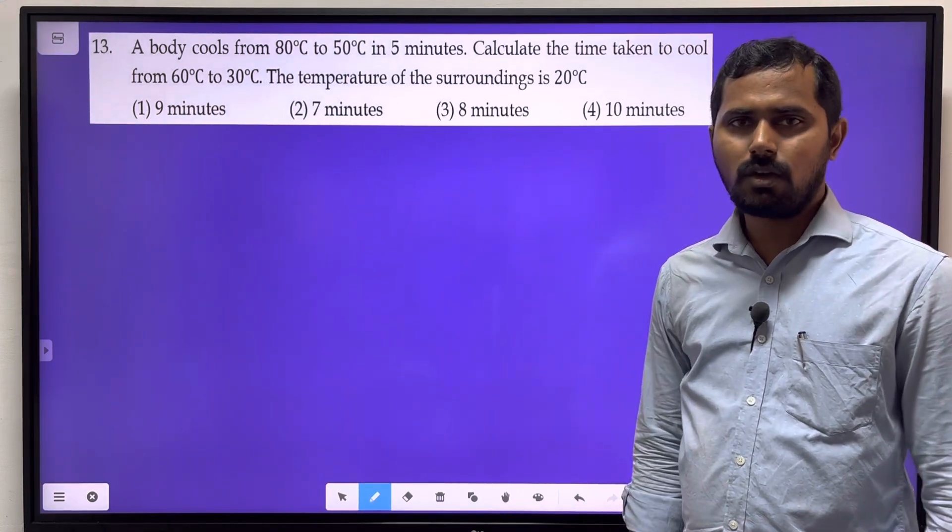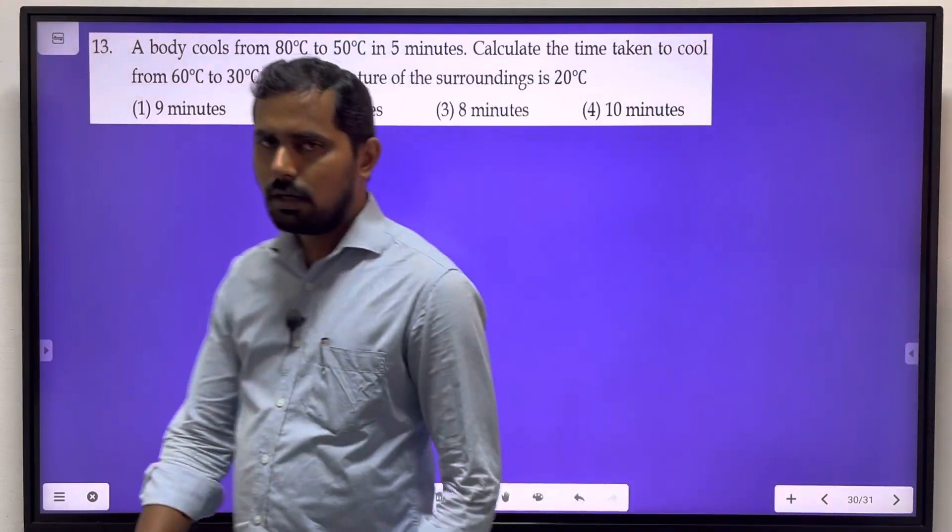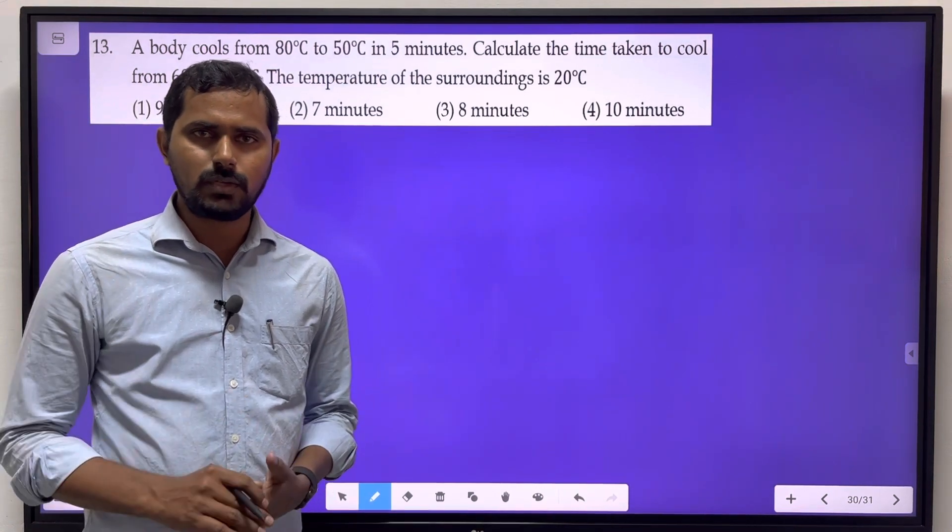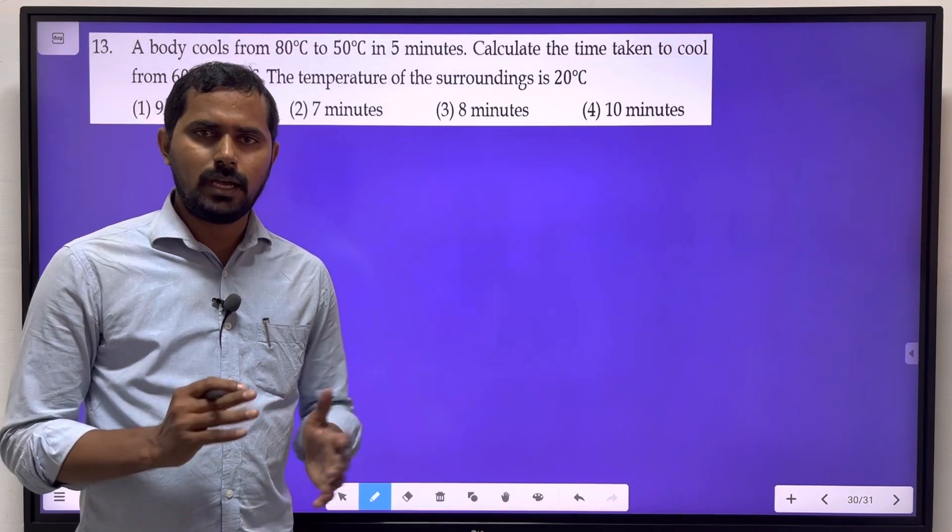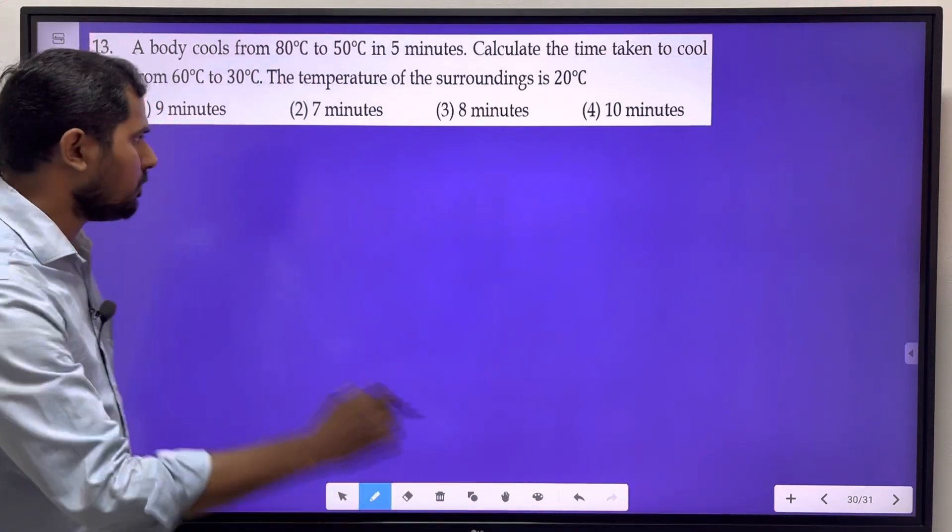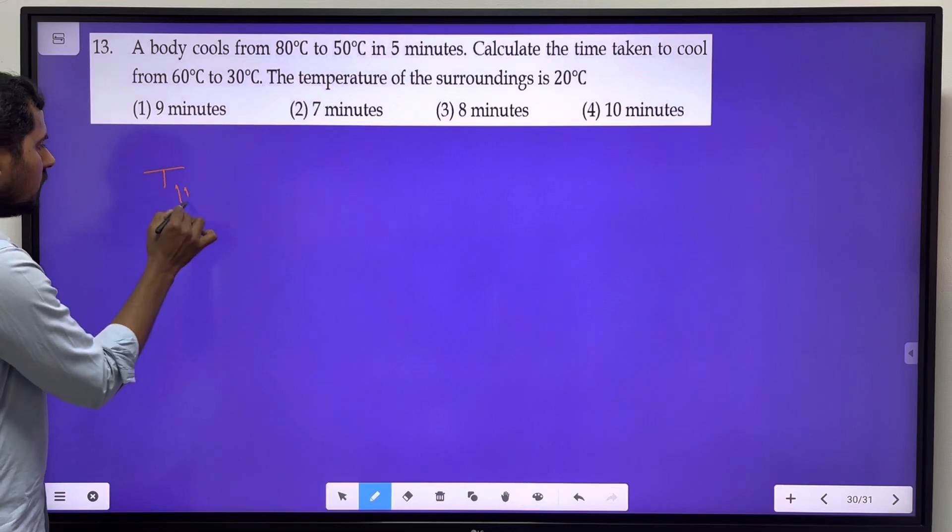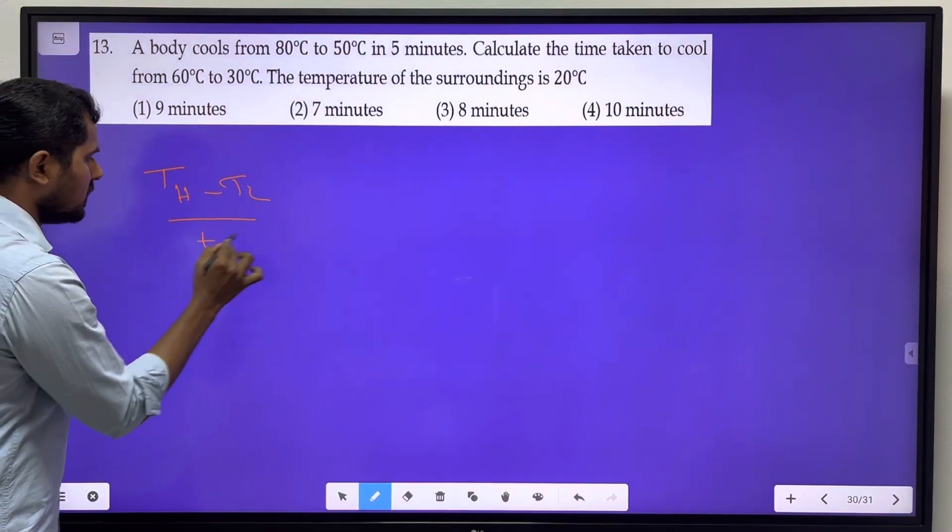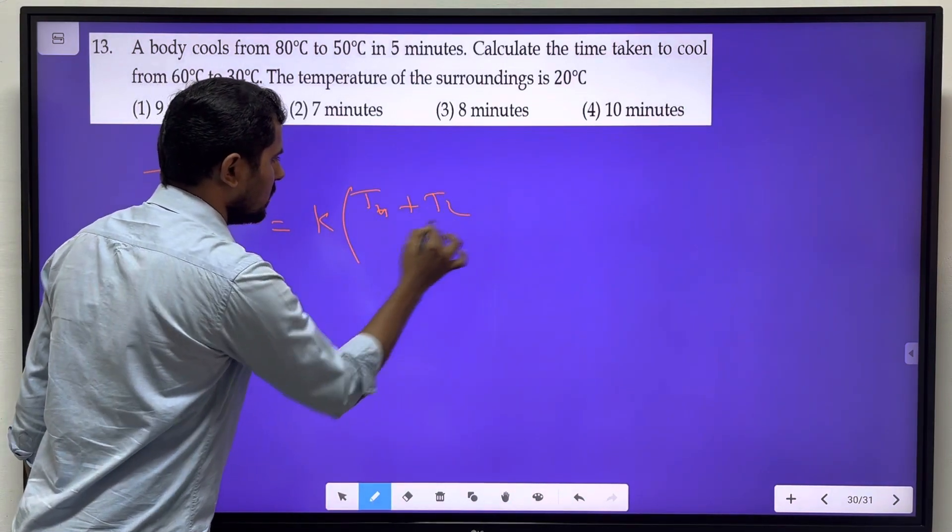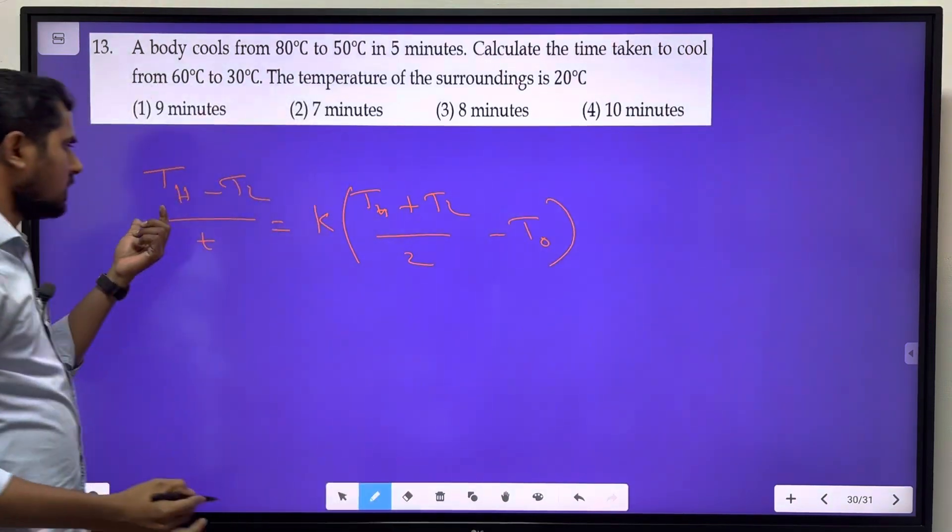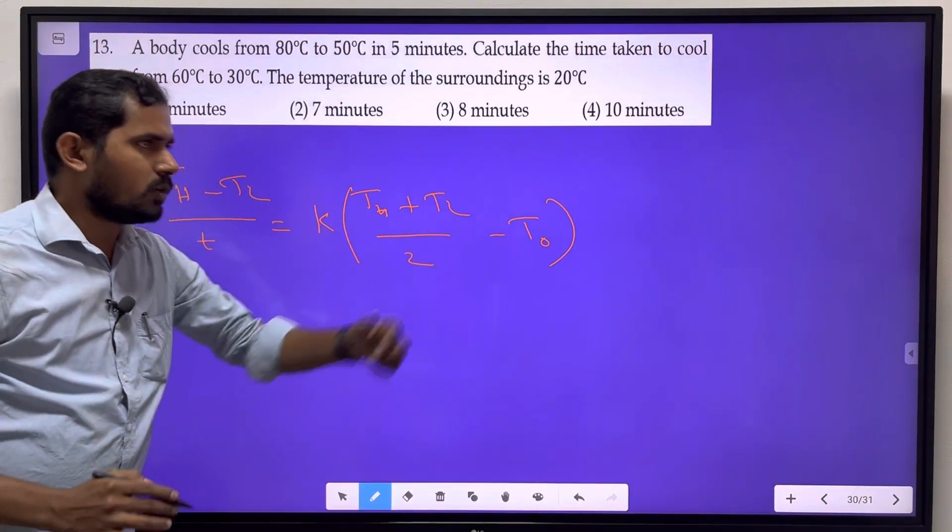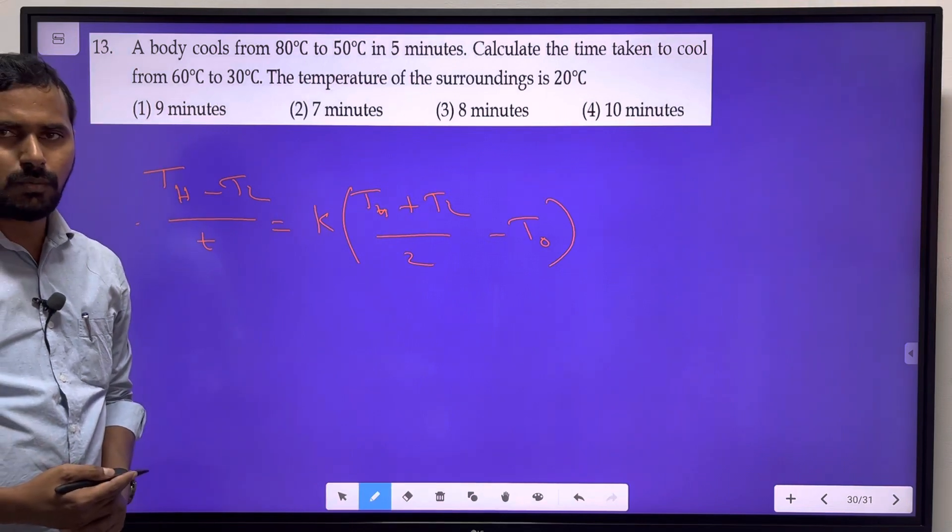If we use Newton's law of cooling formula, we will find that the initial temperature will be faster reduced. The formula is (TH - TL)/T = K × [(TH + TL)/2 - T0], where TH is highest temperature, TL is lowest temperature, T is the time period, K is the constant value, and T0 is surrounding temperature or room temperature.